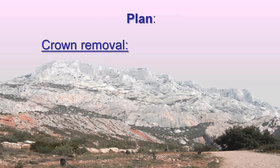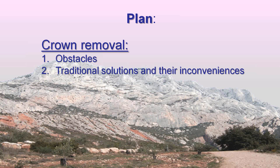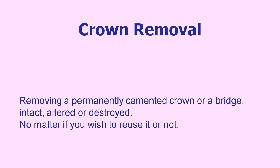Here's how we're going to structure this presentation. First, we'll talk about the difficulties you usually encounter when removing crowns, and explain why you fail with traditional solutions. After that, we'll talk about new solutions, and especially about the Wham Key. One important thing first: when I talk about crown removal, I'm not just talking about crowns you want to reuse — I'm talking about all permanently cemented crowns you want to remove, even if you plan to destroy them.